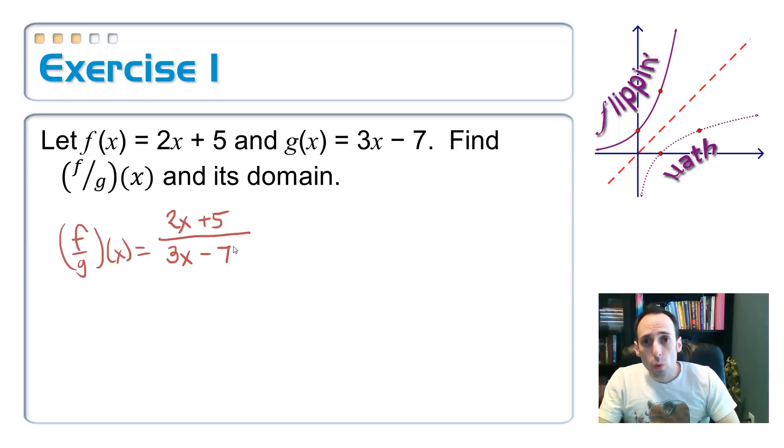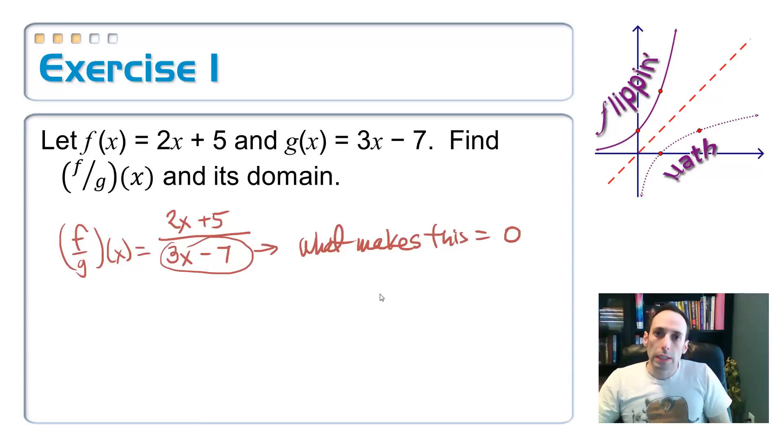We want to find its domain. What we were just talking about before is that you can't divide by zero. So we want to know what makes the denominator zero. Actually, I tend to do this: I go 3x minus 7, and I set it not equal to zero. And pretend that's like an equation and just solve it like normal. I'd add the 7 over and divide by 3, so x cannot be equal to 7 thirds.